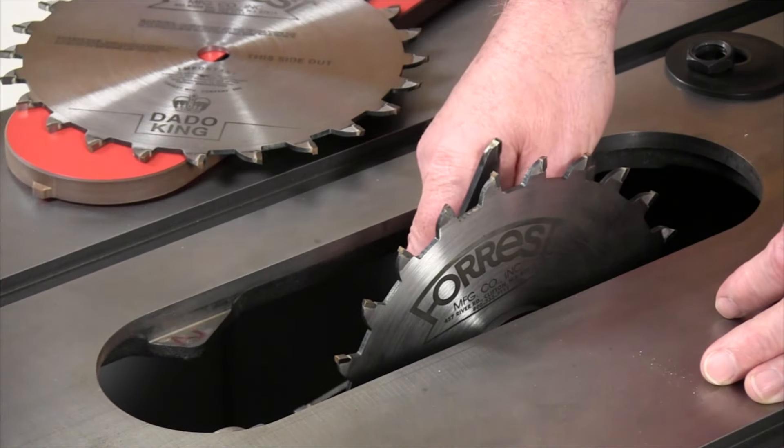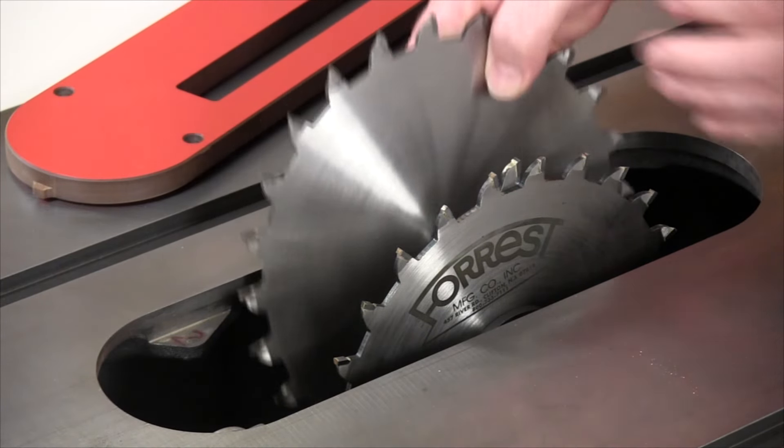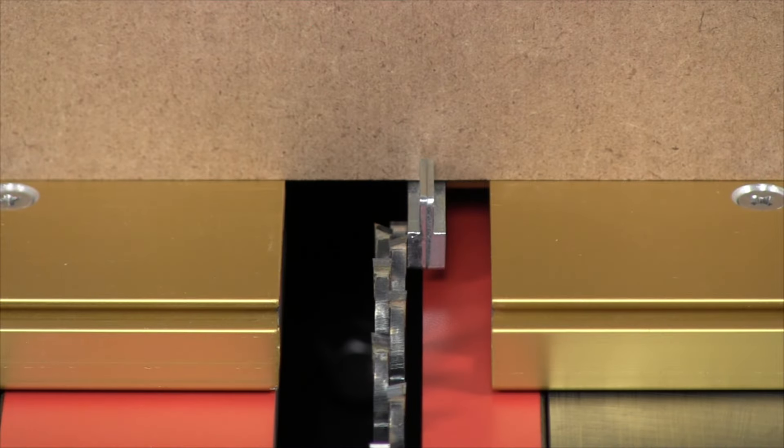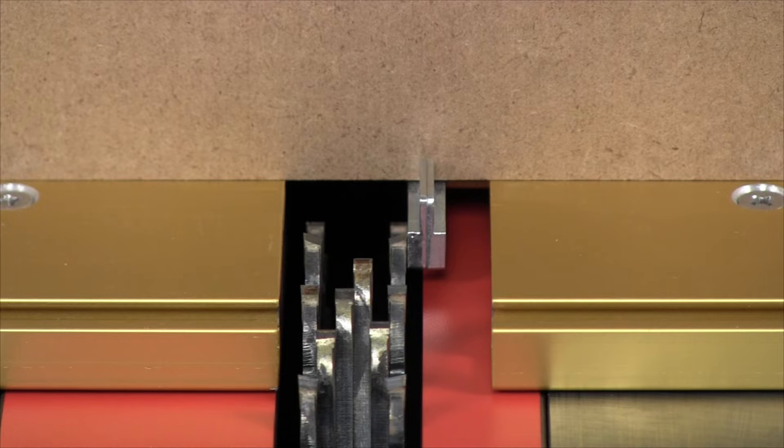And here's the really great news. When used with a standard stack dado blade at your table saw, you may never need to zero again. That's because the zero position for a narrow dado setup is exactly the same as the zero position for a wide dado setup.